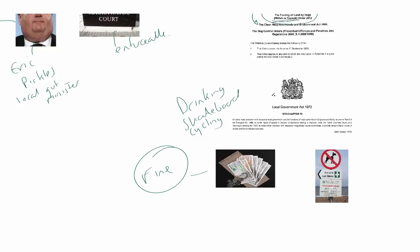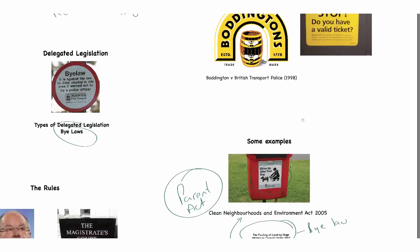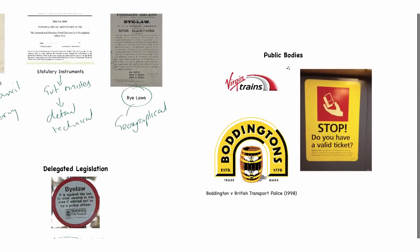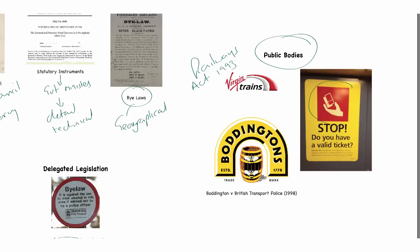The final thing I mentioned at the beginning is that bylaws can also be made by public bodies. The most obvious example of these public bodies or corporations might be the train companies. The Railways Act 1993 allows railway companies to make law. If you've travelled on a train you may have seen a sign by the doors.